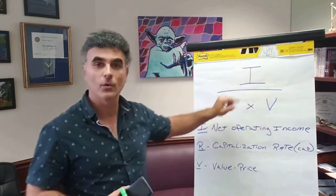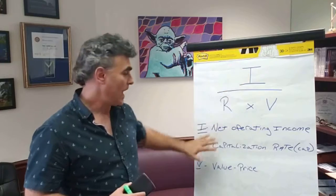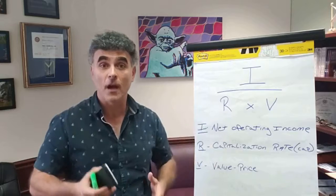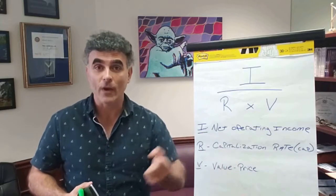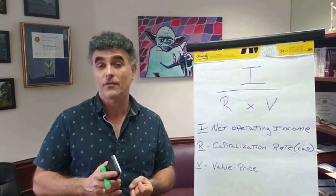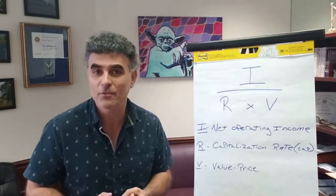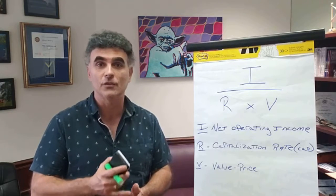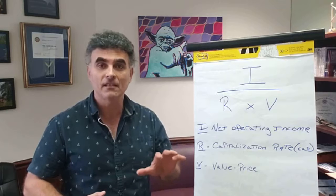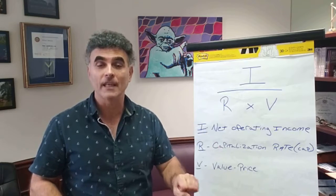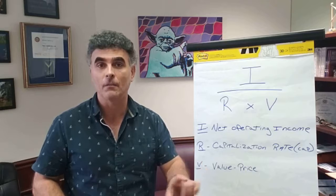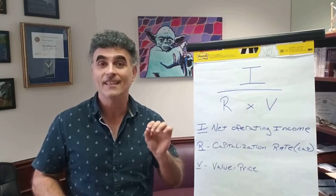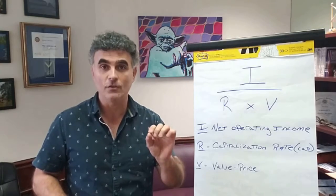So let's get into it real quick. I, right on top over here, stands for net operating income. Net operating income is the income generated from the property minus all the expenses. You get the rents coming in every single month, and then you subtract the property management fee, repairs and maintenance, taxes, insurance, utilities, payroll — anything of an expense to the property. You subtract that from the rents coming in, and that is your net operating income. The one thing you have to make sure not to subtract from the gross rent to get your NOI is the mortgage payment.